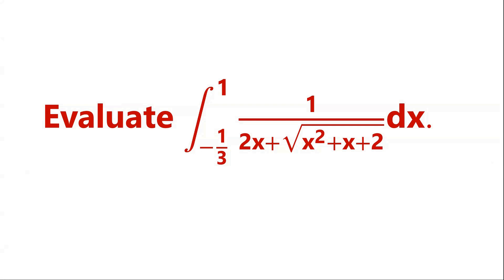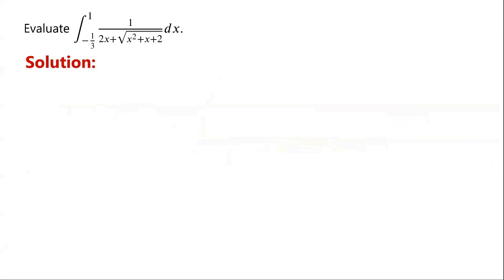Evaluate the integral of 1 over (2x plus the square root of x squared plus x plus 2) dx, from negative one-third to 1. We will evaluate the integral using Euler's substitution.